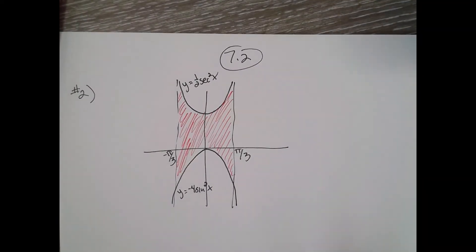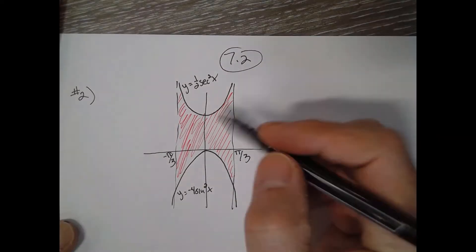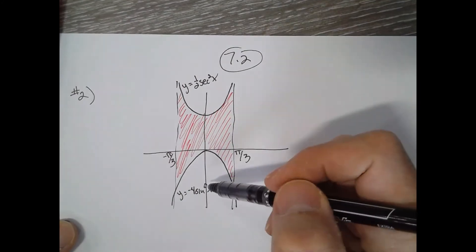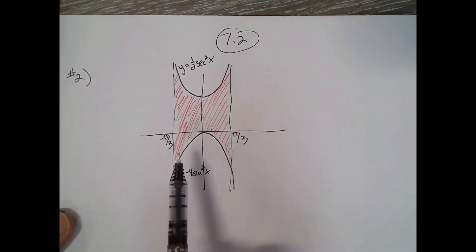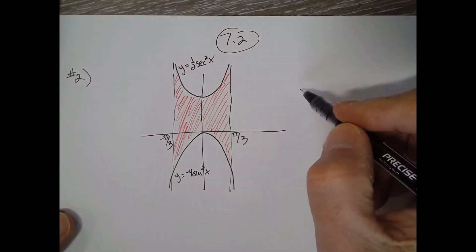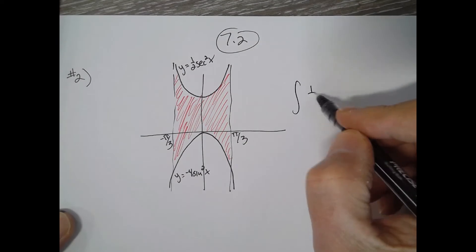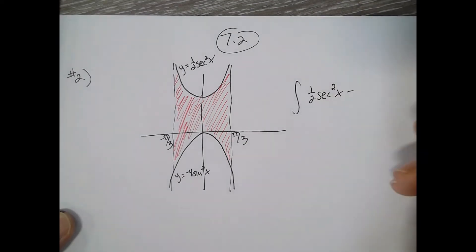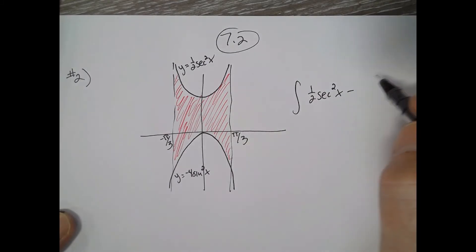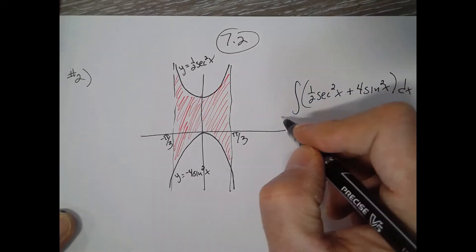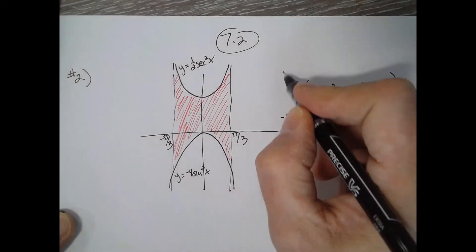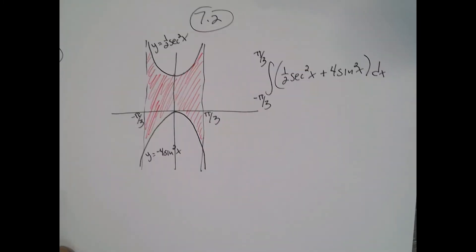Problem 7.2 number 2: finding the area of the shaded region analytically. The shaded region is top minus bottom, so we integrate the top minus the bottom with respect to x. Our boundaries of integration are given as negative pi over 3 to pi over 3. The integral is from negative pi over 3 to pi over 3 of one-half secant squared x minus negative 4 sine squared x dx. That's the easy part — now evaluating it and finding the antiderivatives can get a little messy.